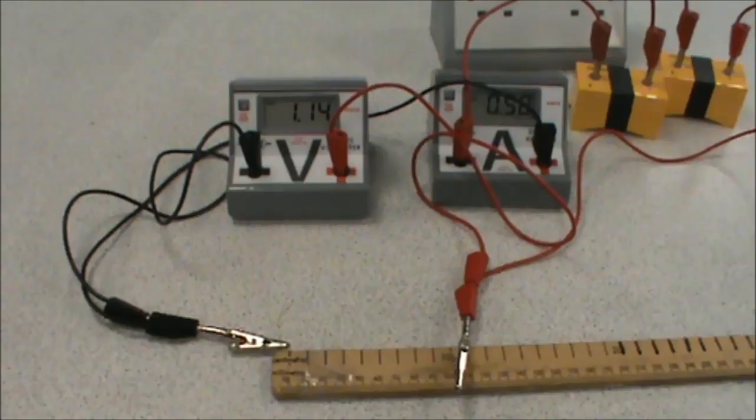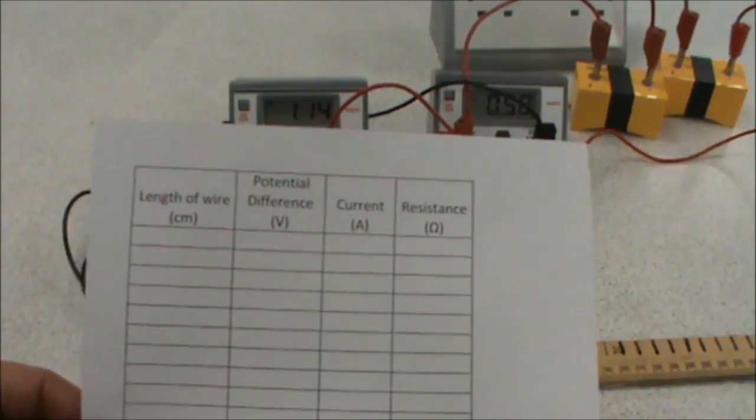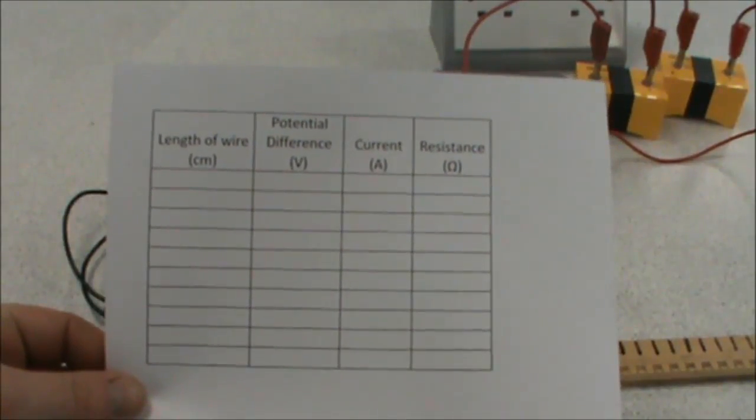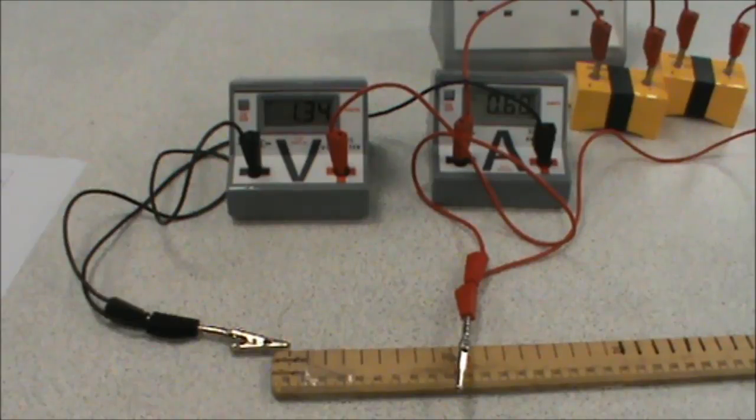These are going to be recorded in our results table, that looks like this. Now in order to plot a graph, we're going to need a minimum of 8 points, preferably 10. And seeing as how we're working with a meter, we can go up in 10 centimeter steps from 10 to 100 centimeters. Our first value, at 10 centimeters, we've got a potential difference of 1.31 and a current of 0.66.